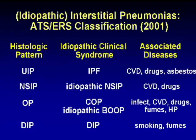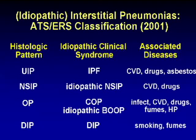Importantly, these same histologic patterns are also associated with known diseases, not just idiopathic syndromes. UIP may be seen with collagen diseases, drug reactions, and asbestosis. NSIP is very common in collagen vascular disease or as a drug reaction. Organizing pneumonia may be related to infection, collagen vascular disease, drugs, fume inhalation, or hypersensitivity pneumonitis. DIP is associated with smoking or fumes and is uncommonly idiopathic.